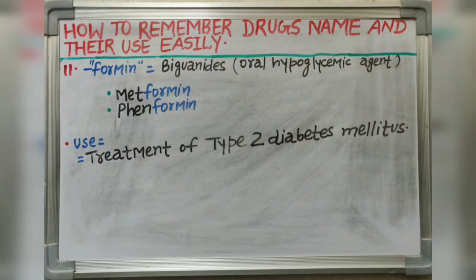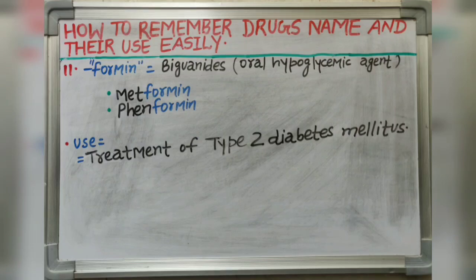Next suffix is -formin. Formin suffix indicates biguanides. It belongs to oral hypoglycemic agents. Drugs like metformin and phenformin belong to biguanides. It is used in treatment of type 2 diabetes mellitus.